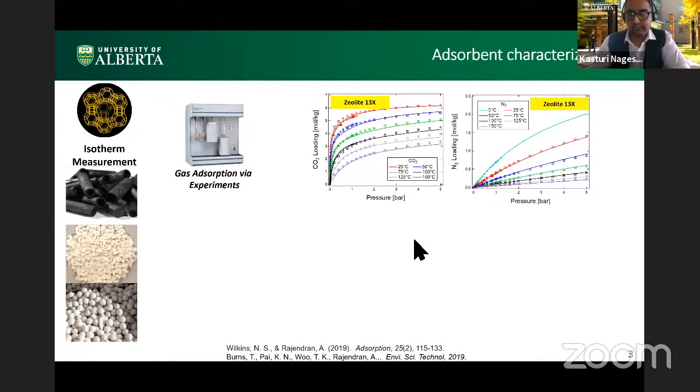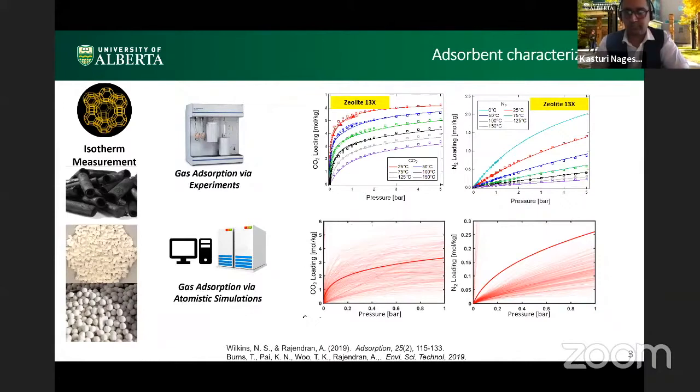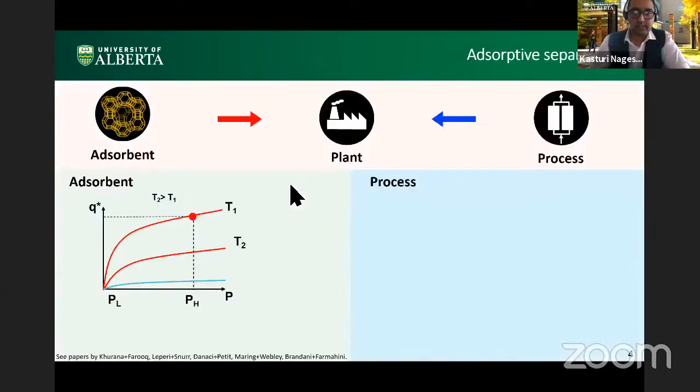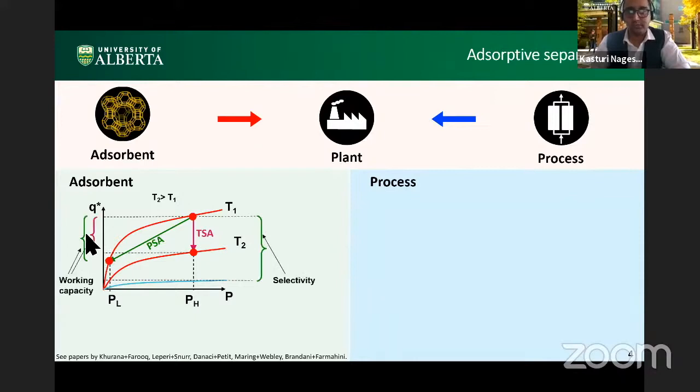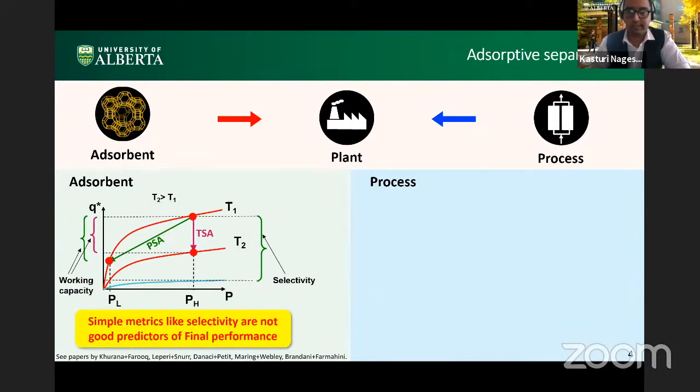Generally, when we talk about isotherms adsorbents, we like to characterize them using what we call as isotherms. So these are plots that show how much of the gas has adsorbed onto the surface as a function of pressure. And we can generally measure them using experimental setups or using atomistic simulations to predict the gas loadings. Now, once we have an isotherm, we'll know how much of the gas adsorbs onto the surface of this adsorbent. And then by changing either the temperature or the pressure of this system in a TSA or a PSA framework, we can build processes that can exploit this affinity to separate the mixtures.